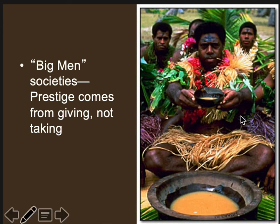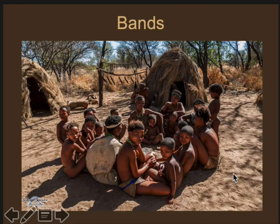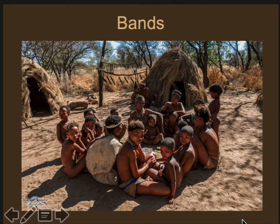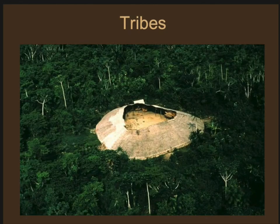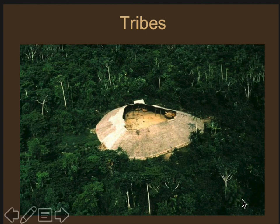Their status is not fixed or permanent — there are no fixed classes. Archaeologically, if you find a fairly small site of 25 to 30 people with evidence that people didn't live there all year round, you're probably looking at a band society. If you've got villages that are all the same size but much bigger than hunter-gatherer camps — around 100 to 200 people — with evidence they lived there year-round, you probably have a tribal society.